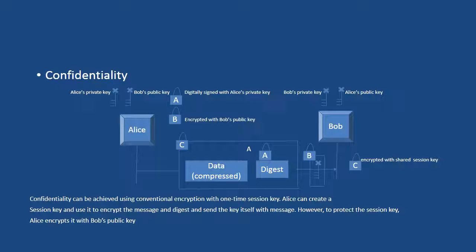Confidentiality can be achieved using conventional encryption with a one-time session key. Alice can create a session key, use it to encrypt the message and digest, and send the key itself with the message. However, to protect the session key, Alice encrypts it with Bob's public key before sending.